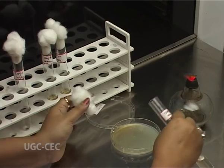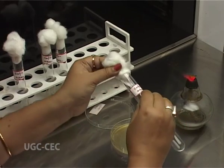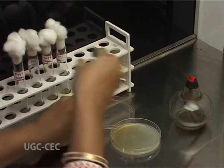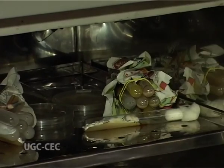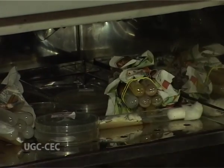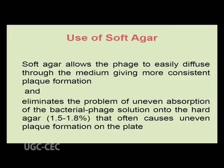The mixture of host, phage, and soft agar is poured immediately onto the respective hard agar plates. Hard agar contains 1.5 to 1.8% agar. As soon as the soft agar solidifies, the plates are incubated at 37°C in an inverted fashion. E. coli cells carrying the T4 genome will produce new T4 viruses, which will infect neighboring cells by diffusing through the medium. This is the purpose of soft agar — it allows smooth diffusion of T4 phages and eliminates uneven absorption on the hard agar plate.